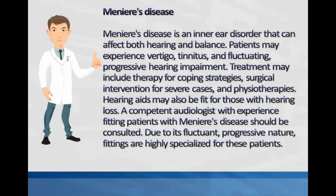Meniere's disease is an inner ear disorder that can affect both hearing and balance. Patients may experience vertigo, tinnitus, and fluctuating, progressive hearing impairment. Treatment may include therapy for coping strategies, surgical intervention for severe cases, and physiotherapies. Hearing aids may also be fit for those with hearing loss. A competent audiologist with experience fitting patients with Meniere's disease should be consulted, as due to its fluctuant, progressive nature, fittings are highly specialized for these patients.